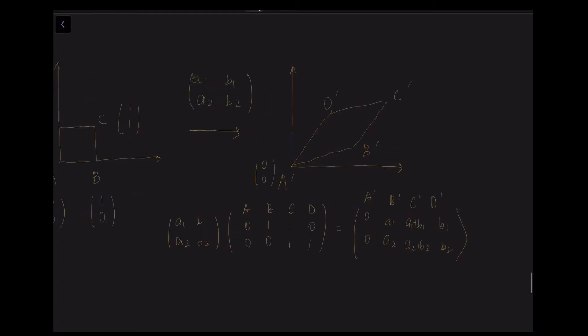So after transformation, A prime is 0, 0, B prime is A1, A2, C prime is A1 plus B1, A2 plus B2, while D prime is B1 and B2.